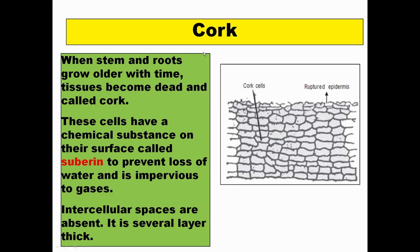Cork forms when the stem and roots become older; tissues become dead due to suberin deposition. Suberin is a thick, waxy coating which prevents loss of water and is totally impervious to gases — no gas can cross this barrier. Intercellular spaces are totally absent, and cork has several layers. These are the protective cells of older stems and roots.